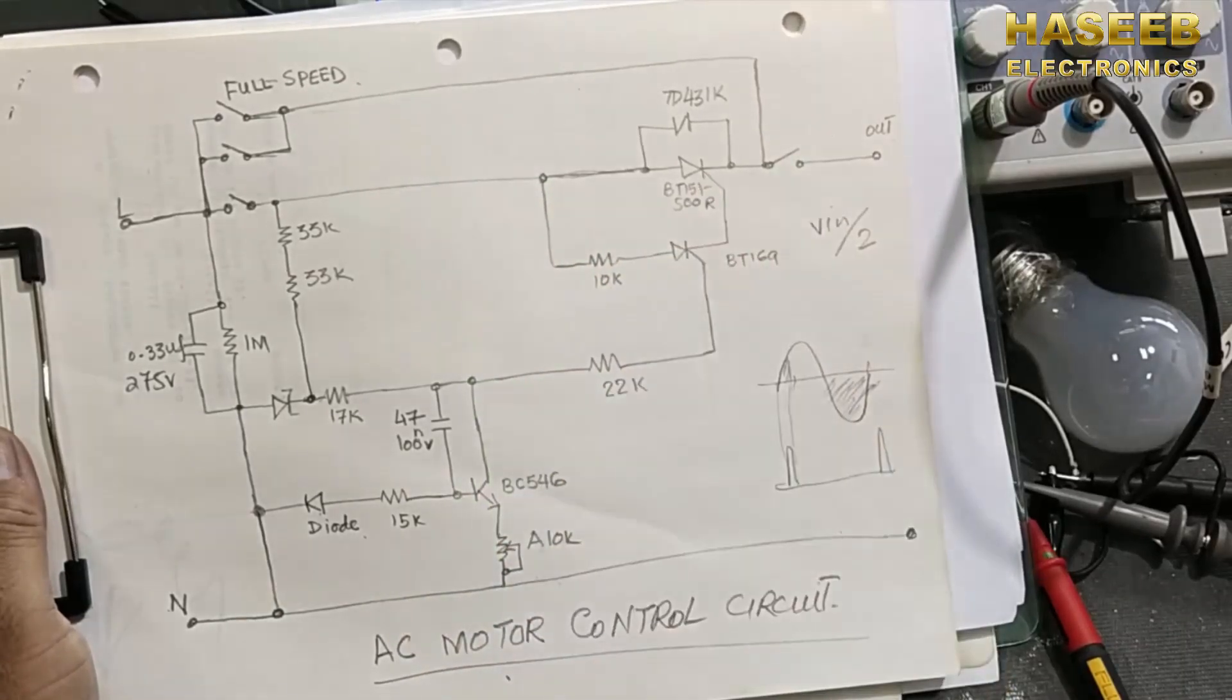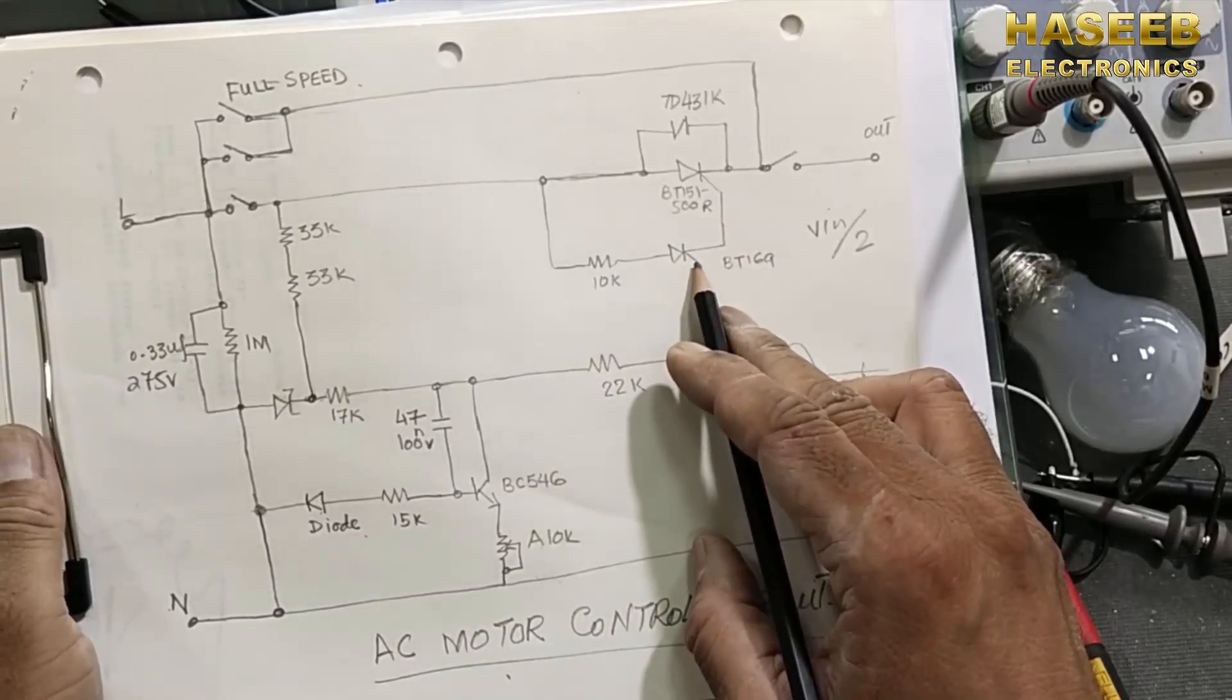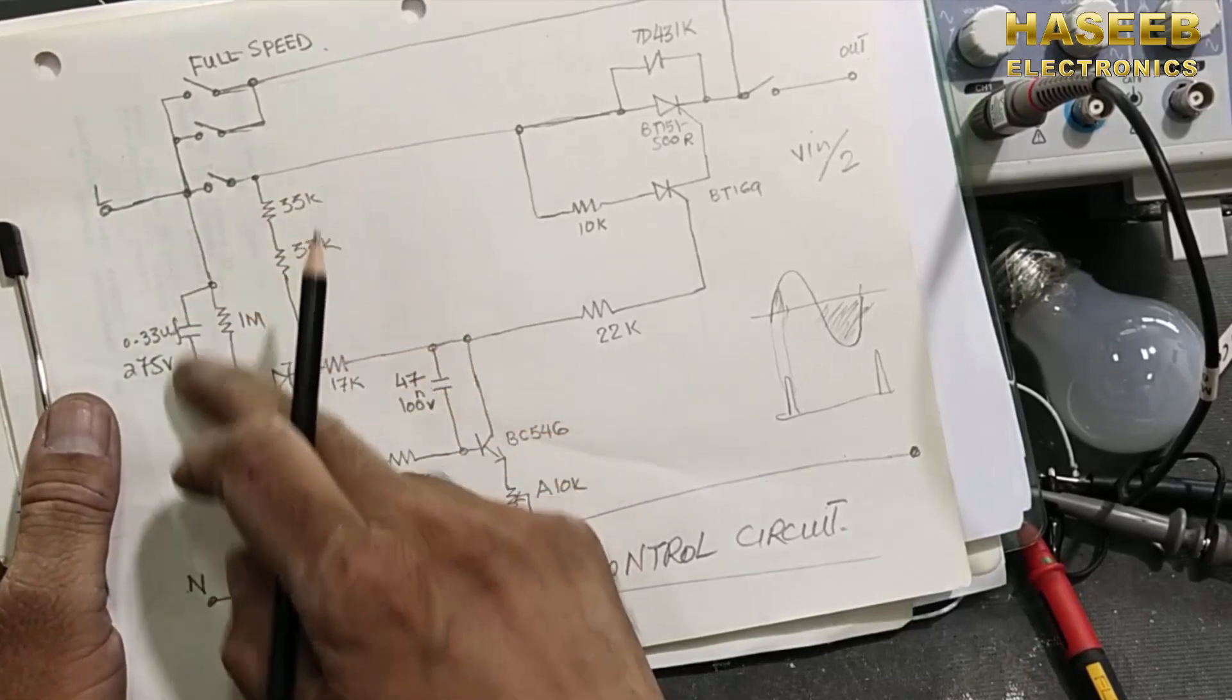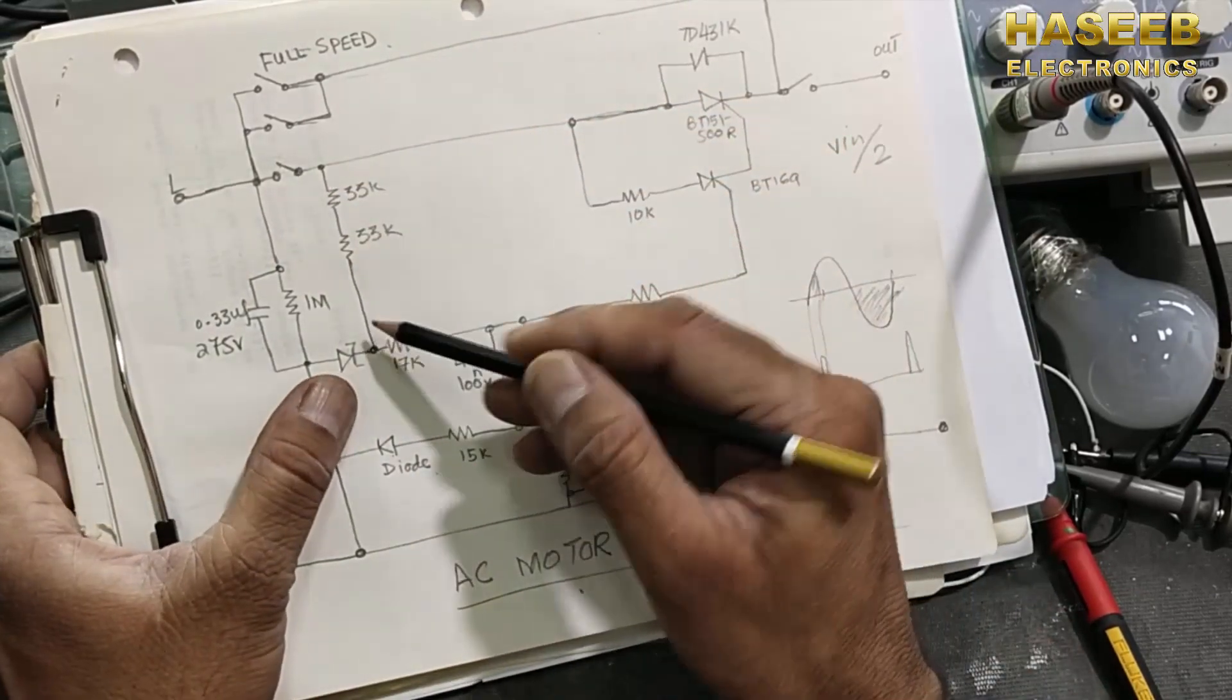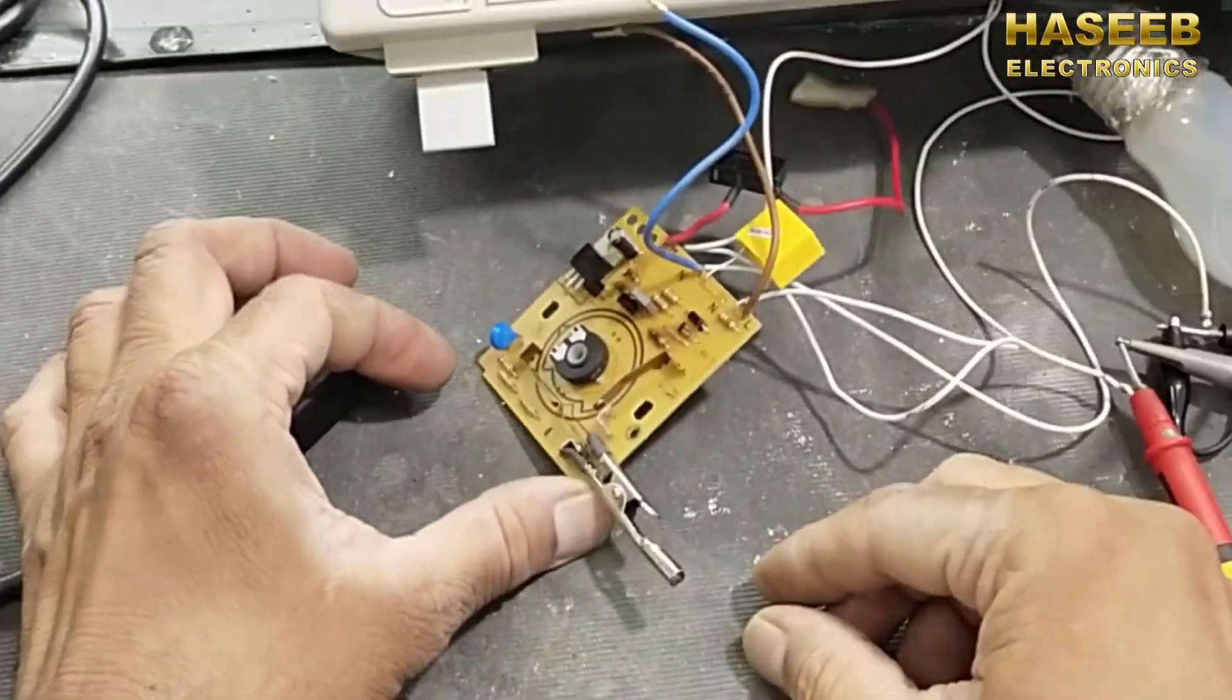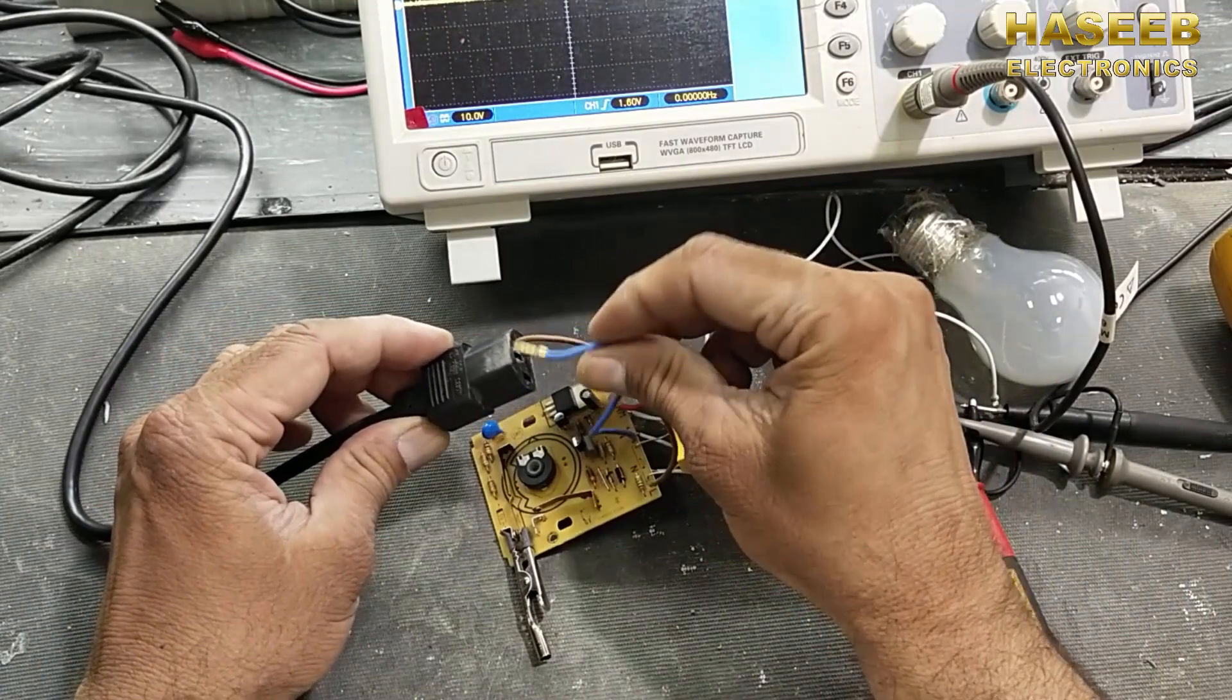We are taking this voltage here to this, but we are controlling the conduction time of this SCR. Here this is the switch which enables this circuit. When we turn on this switch, the voltage will reach to this zener diode. I bypass this circuit so that it will turn on directly.